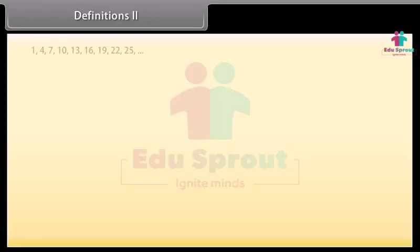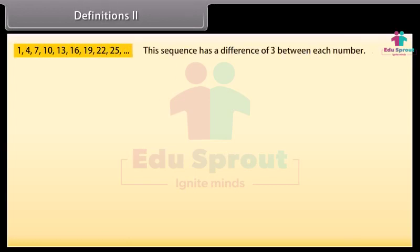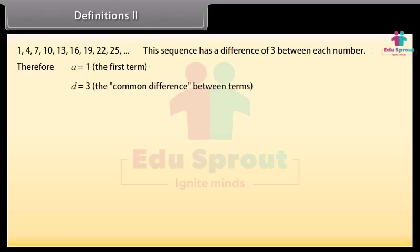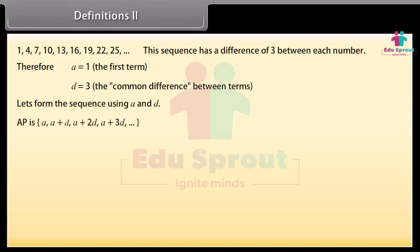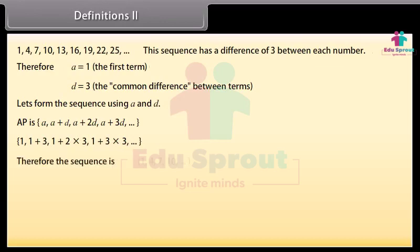Look at this example now. We can see that this sequence has a difference of 3 between each number. Therefore, A is equal to 1, the first term, and D is equal to 3, the common difference between terms. Substituting the value of A and D we get: 1, 1 plus 3, 1 plus 2 into 3, 1 plus 3 into 3 and so on, which gives the sequence 1, 4, 7, 10 and so on. There are two types of arithmetic progression: finite arithmetic progression and infinite arithmetic progression.